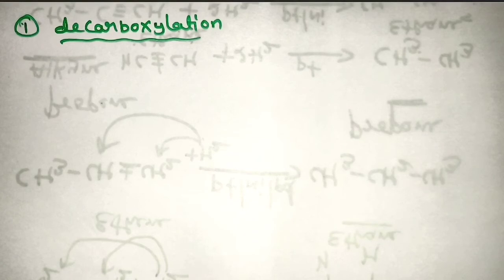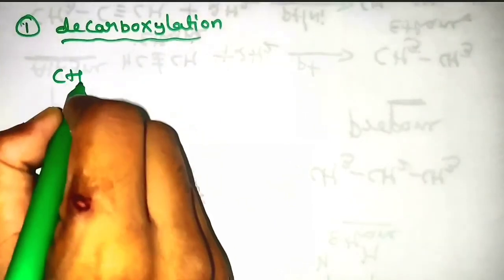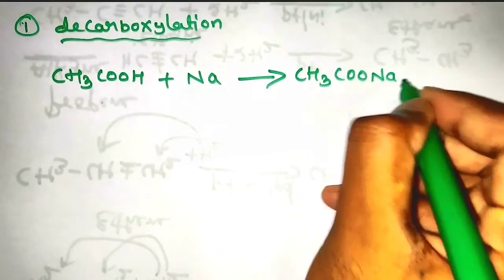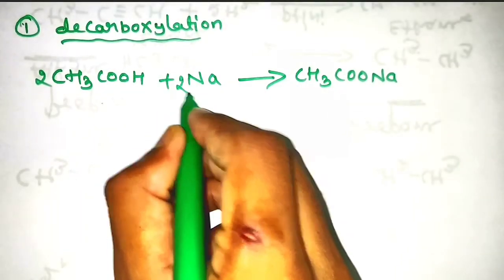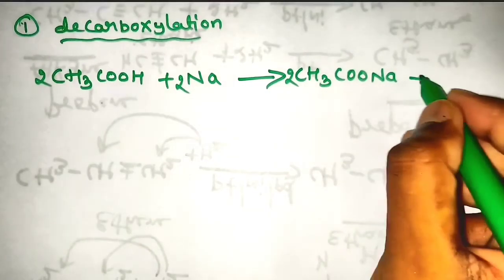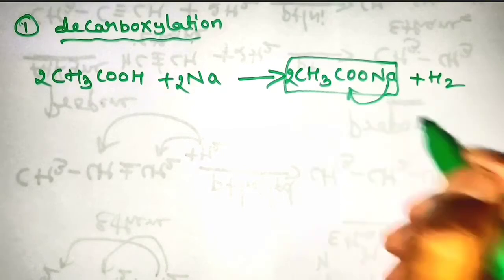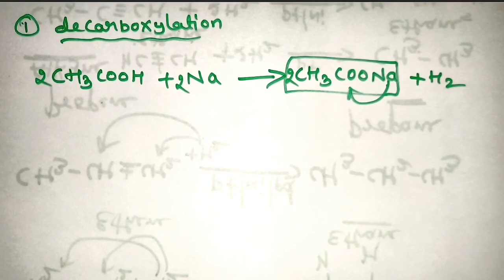In decarboxylation, we take the salt of carboxylic acid and heat it with soda lime. First, you should know how to prepare the salt of carboxylic acid. If you take CH3COOH and heat with sodium metal, it will be converted into CH3COONa — sodium salt of carboxylic acid, also called sodium ethanoate or sodium acetate — plus H2.